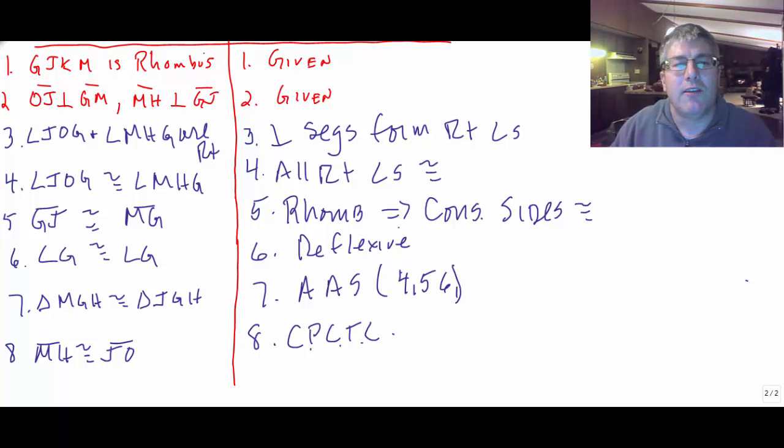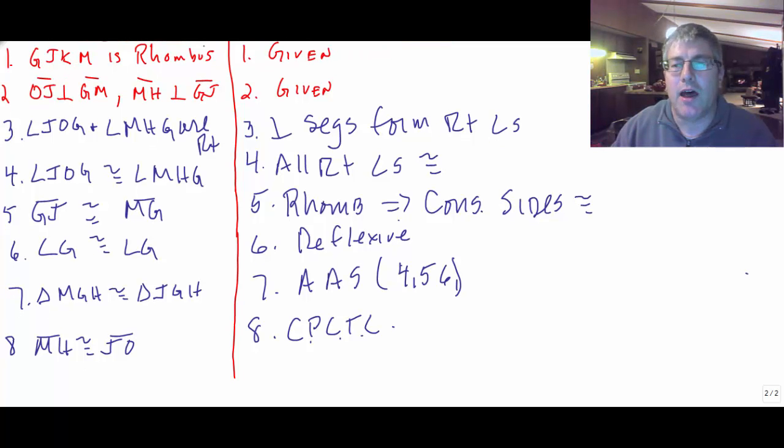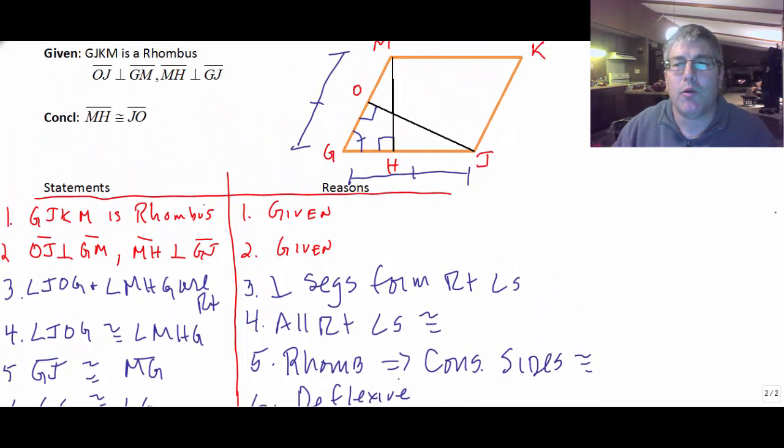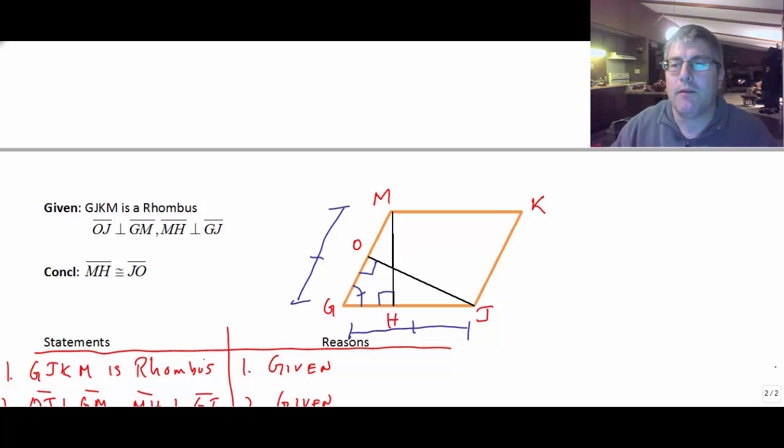So there's an example of using angle, angle, side in a proof. You will also be using no-choice in a proof. And that only proves angles congruent. And you'll work more on that when I see you in class.